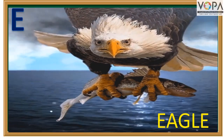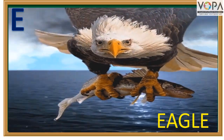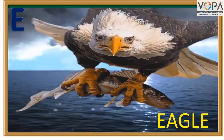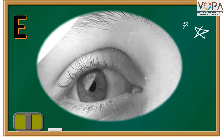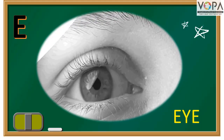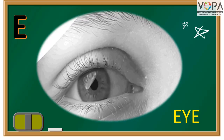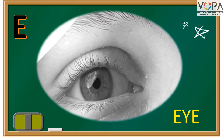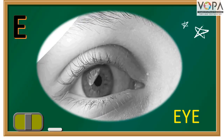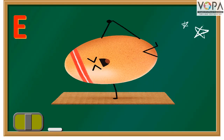E for Eagle. E, A, G, L, E. Eagle. E for Eye. Eye is a part of texture and light.